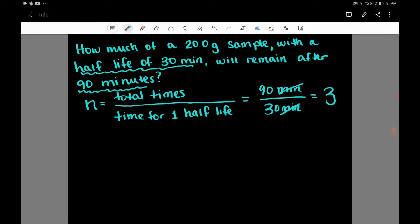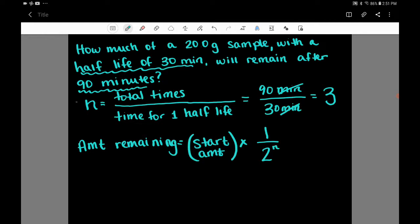So the next thing we need to be concerned with is, okay, that's great. We know that there are three dividing, three halves going on here. So how do we use that? And so there's this really great formula where we can figure out the amount remaining is the starting amount times the fraction remaining, which is this formula because everything is being divided by two, one over two to the N, where we remember N is our number of half-lives.